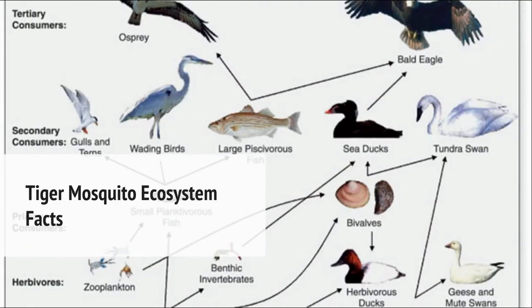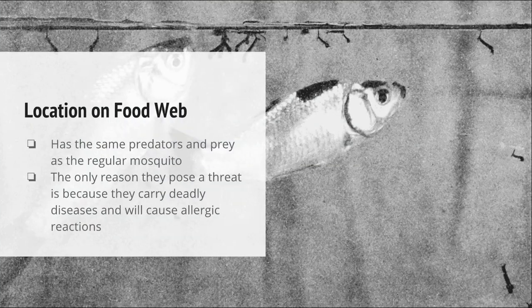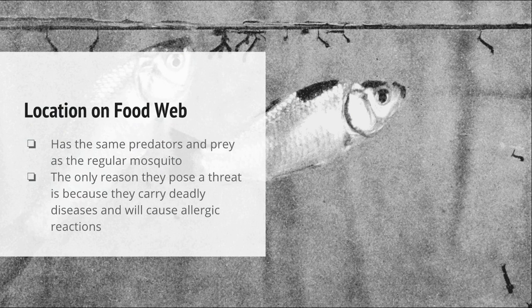Tiger Mosquito ecosystem facts: the Tiger Mosquito has some predators. They have the same predators as native mosquitoes in the area, such as cannibalistic mosquitoes. Mosquito fish basically chomp on their larvae. The only reason they pose a threat is because they carry deadly diseases and cause allergic reactions in native animals, mainly because those animals are not used to their bites. In the background is a picture of a mosquito fish eating mosquito larvae.